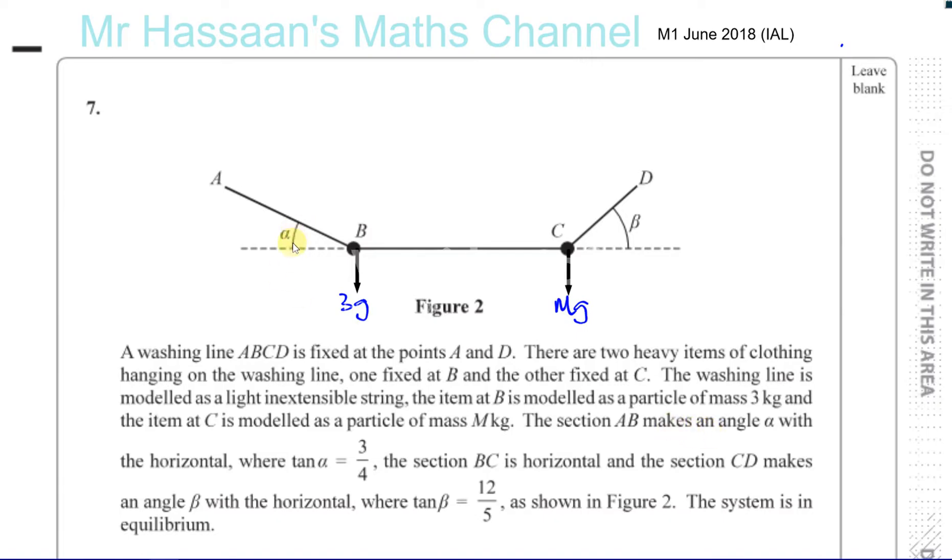The section AB makes an angle of alpha with the horizontal, where tan of alpha is 3 quarters. So the tan of alpha is 3 quarters. So if we had a triangle, this would be alpha, this would be 3, this would be 4, this would be 5. So therefore the sine of alpha would be opposite over hypotenuse, 3 fifths. And the cosine of alpha would be adjacent over hypotenuse, which would be 4 fifths.